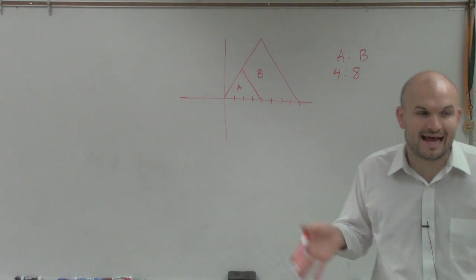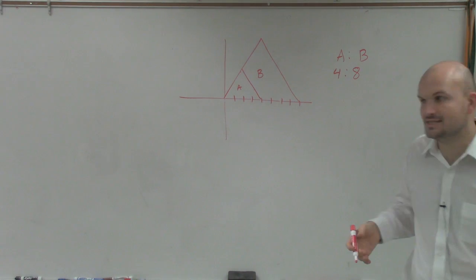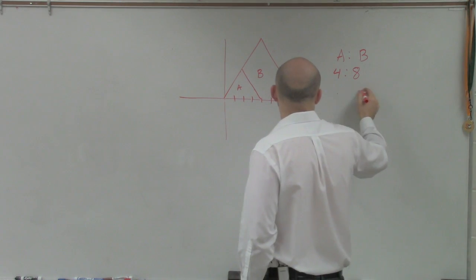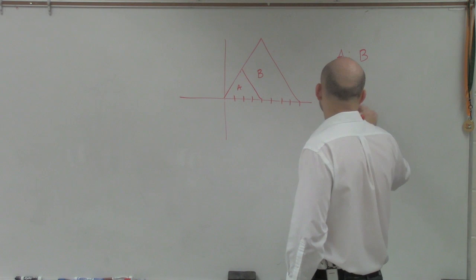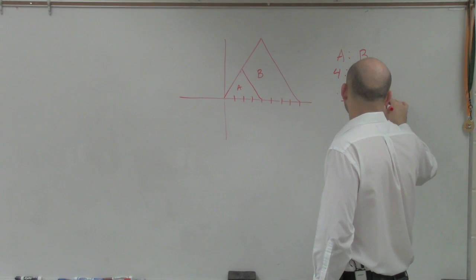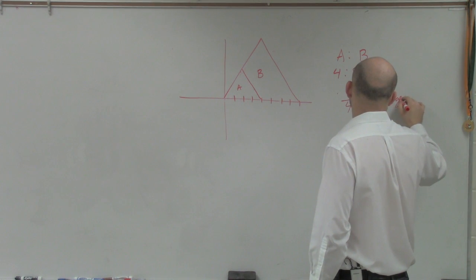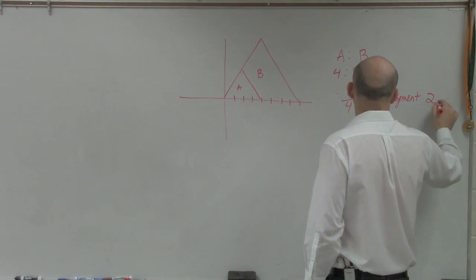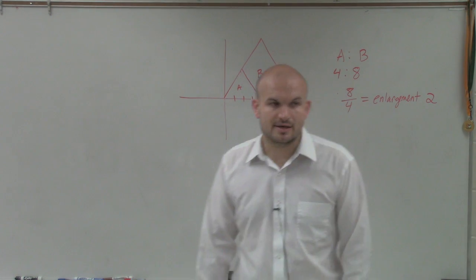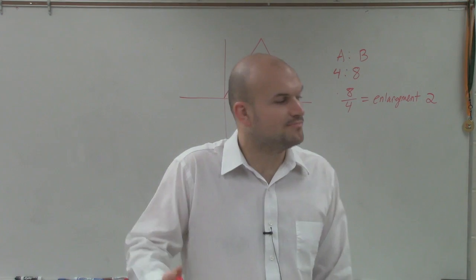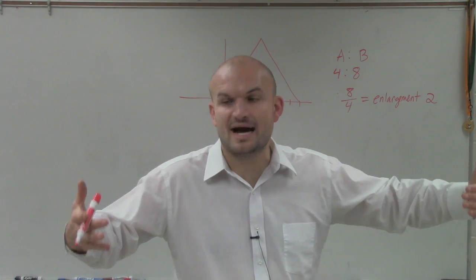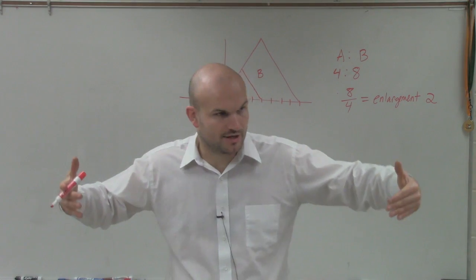However, remember, we're going from A to B. So I want to see how much larger is that. So if I write my ratio as 8 over 4, you can see that it is an enlargement of 2. So the larger triangle is double the size of my smaller triangle.